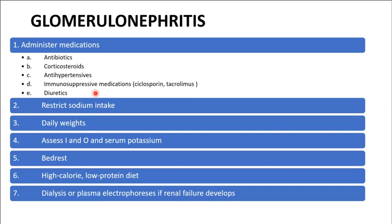Restrict sodium intake. If the client is oliguric (output less than 400 mL/day), also restrict water intake. Carry out daily weights, assess intake and output, and monitor serum potassium. Place the client on bed rest. Give a high-calorie, low-protein diet. Dialysis may be needed if uremia develops, or plasmapheresis if renal failure develops — plasmapheresis removes antibodies that are attacking the body's own system.